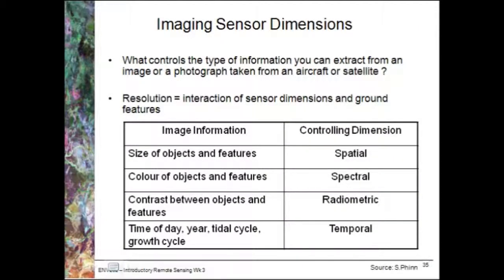There are four controlling dimensions that allow us to determine the type of information we can extract from an image taken from an aircraft or satellite. We speak of spatial, spectral, radiometric, and temporal dimensions. Spatial is space, spectral is colour, radiometric is contrast, and temporal is time.